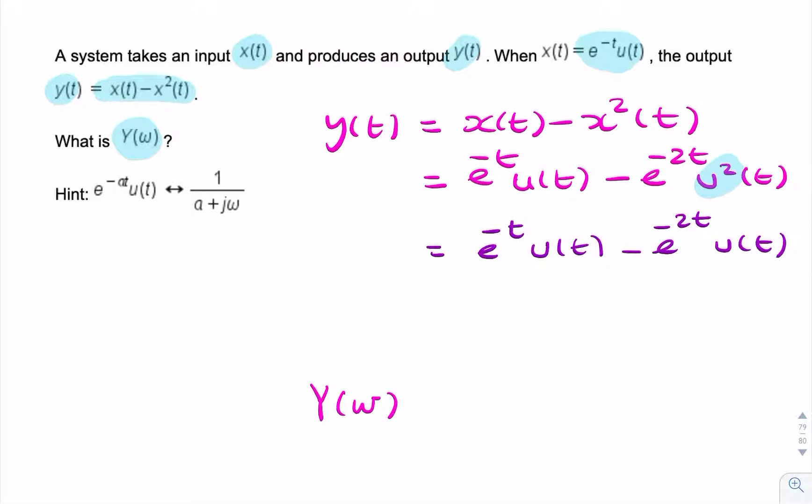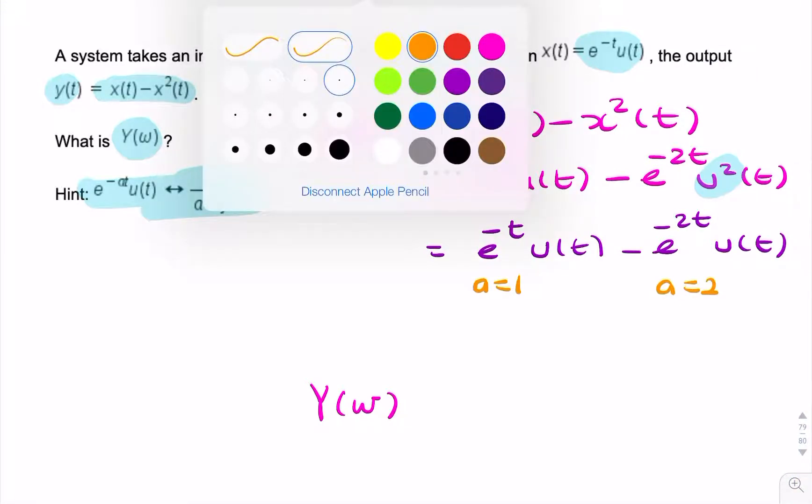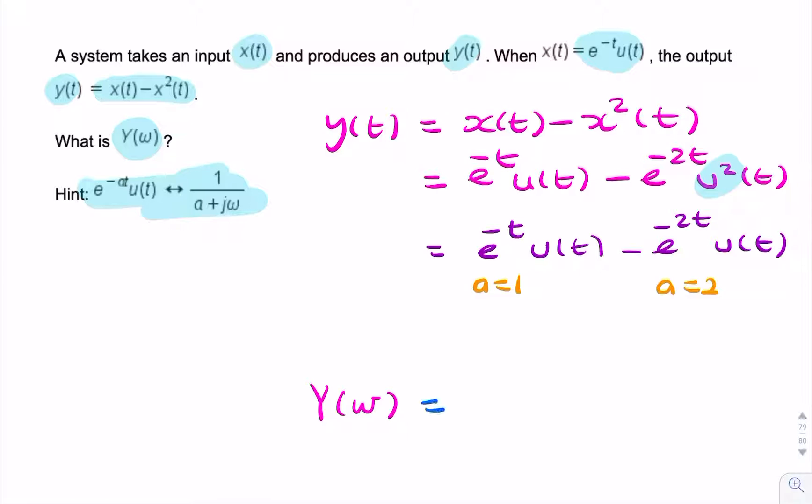We're given this Fourier pair, so we can simply use that, noticing that here a = 1, and here a = 2.